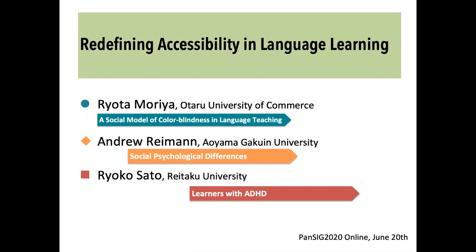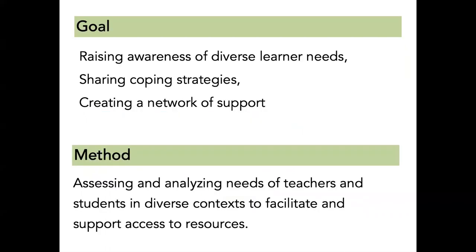Let me introduce the presenters. The first presenter, Ryota Moria, will investigate the way in which a colorblind learner was constructed in the classroom. The second presenter, Andrew Ryman, will discuss social psychological differences that he studied in his classrooms. The third presenter, Ryoko Sato, will describe two case studies regarding learners with ADHD. Finally, we will conclude our discussion by sharing our idea to create a new SIG in JALT.